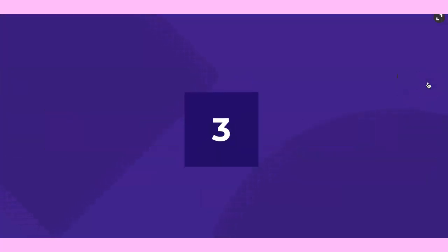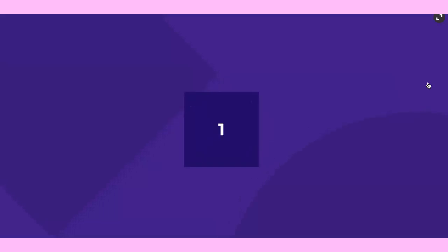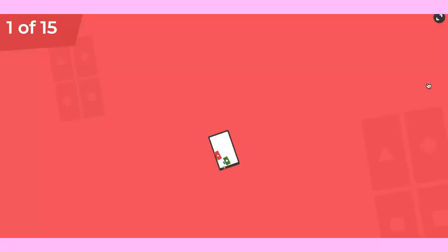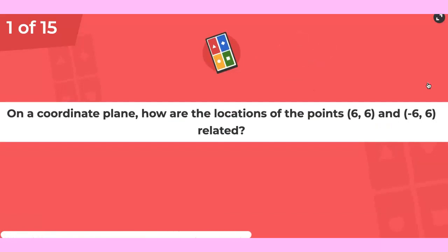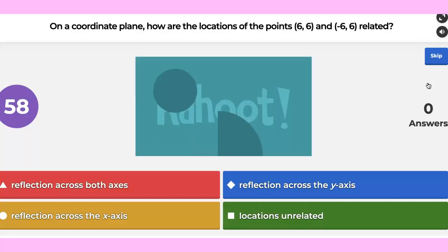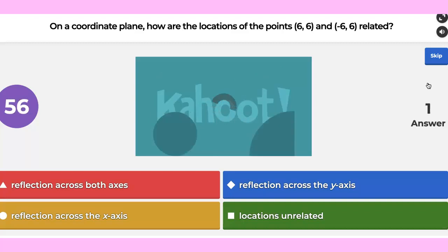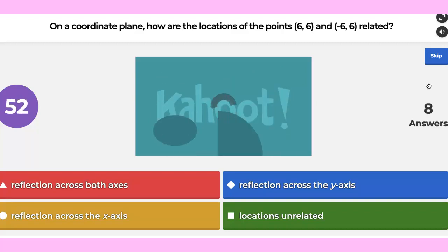Absolute value and coordinates. So on the coordinate plane, how many locations are? How are the locations of 0.66 and negative 6 related?